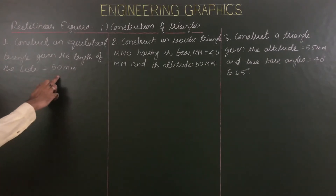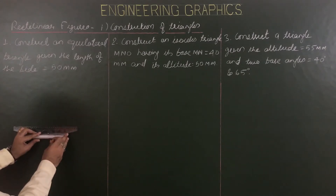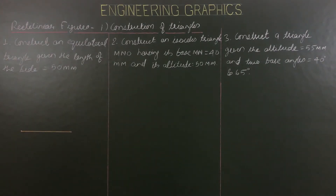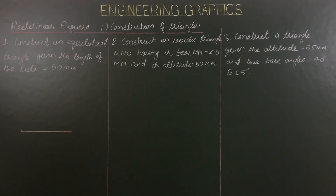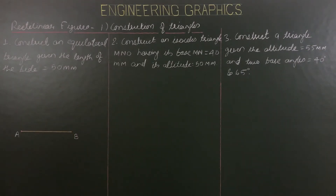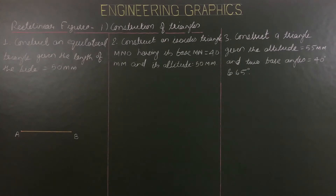For construction, first of all draw a straight line of length 50 mm. The orange color represents the HB pencil used for construction work. These two ends of the first side are named A and B — please use H pencil for naming. We have two methods for construction of an equilateral triangle: first, the compass or arc method, and second, the angle or protractor method. In this question we are going to use the arc method.